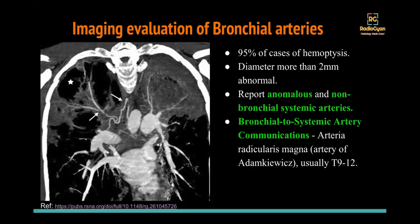Coming to bronchial artery evaluation: 90 to 95 percent of hemoptysis is caused by bronchial artery pathology. Someone asked the cutoff — two millimeters is quoted, but a simple way to remember is: if you can see the bronchial arteries, they're abnormal. Normally you don't see them. So when you go to reporting, go through your chest CTs — I don't think you'll be able to see any bronchial arteries. The moment you start seeing them and there is relevant history, they are abnormal. Report anomalous and non-bronchial systemic arteries because if they're not embolized, they cause recurrent hemoptysis.